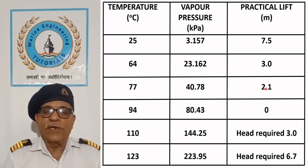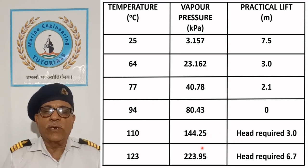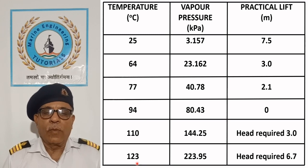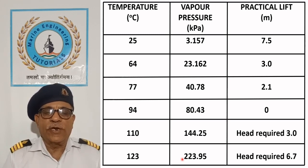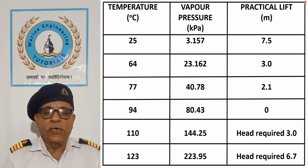At 110°C, vapor pressure is 144.25 kPa; the pump now needs a head of 3 m to draw the water. Similarly, when water temperature is 123°C, vapor pressure becomes 223.95 kPa and the pump requires a head of 6.7 m to draw the water.